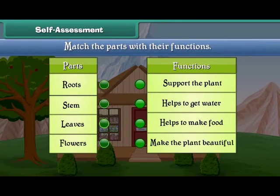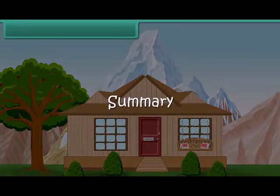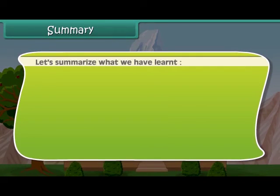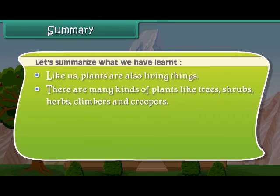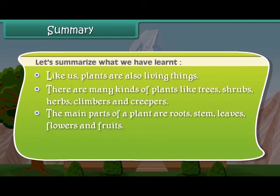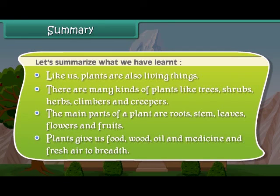Friends, now let's check your understanding. Match the parts of plants with their functions. Now let us summarize what we have learned so far. Like us, plants are also living things. There are many kinds of plants like trees, shrubs, herbs, climbers, and creepers. The main parts of a plant are roots, stem, leaves, flowers, and fruits. Plants give us food, wood, oil, medicine, and fresh air to breathe.